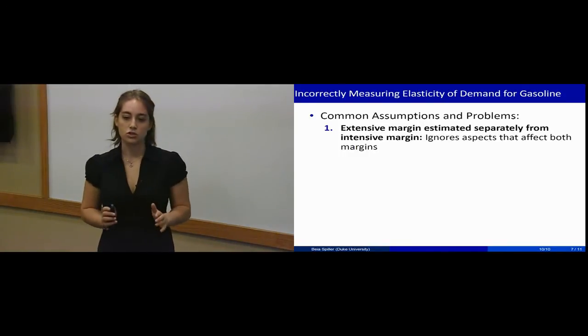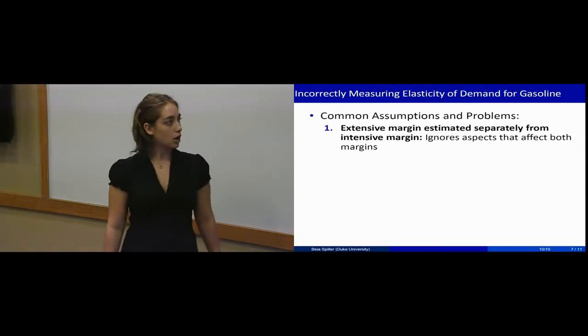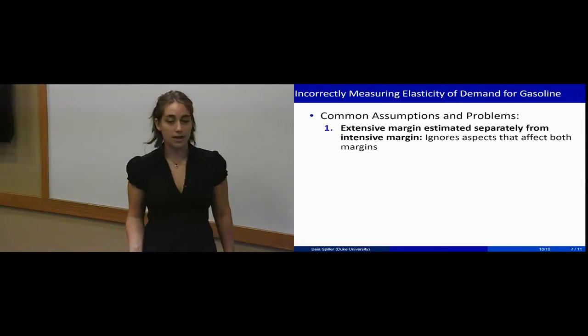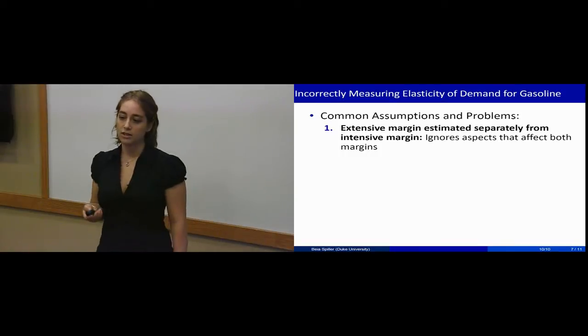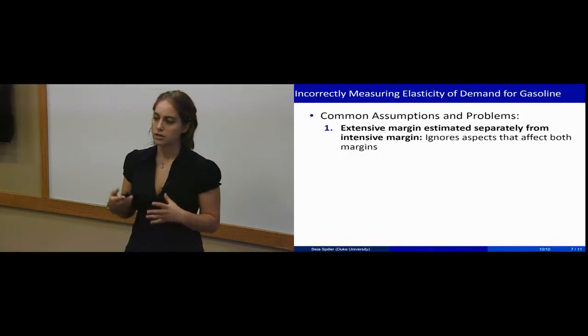The first thing that many researchers do, which I claim is a problem, is that they estimate the extensive margin—what types of vehicles people purchase—separately from the intensive margin, which is how much people drive.